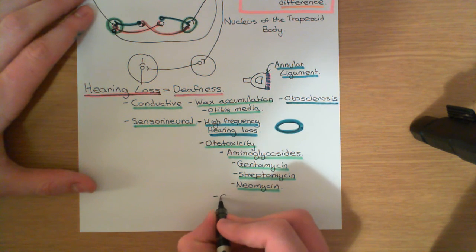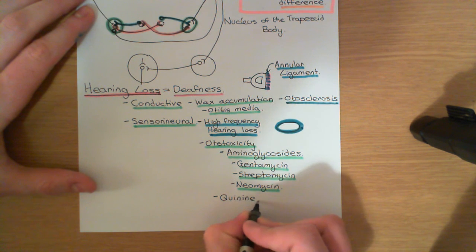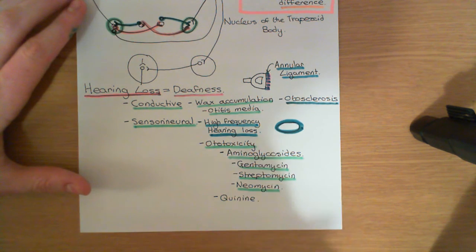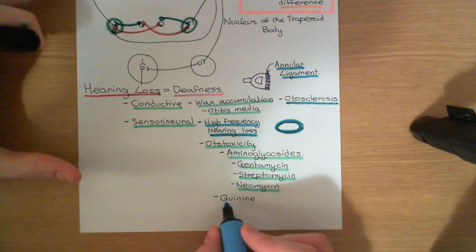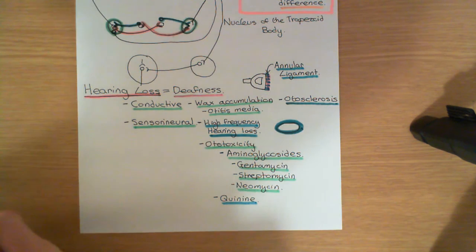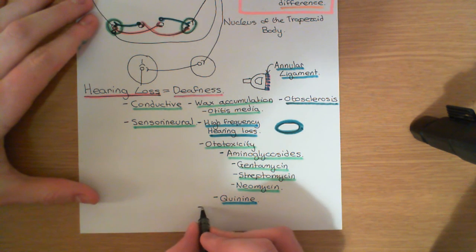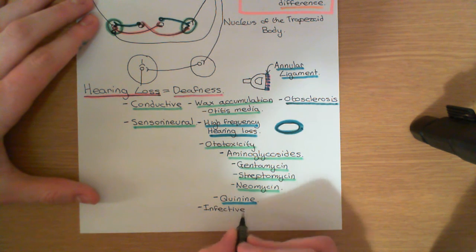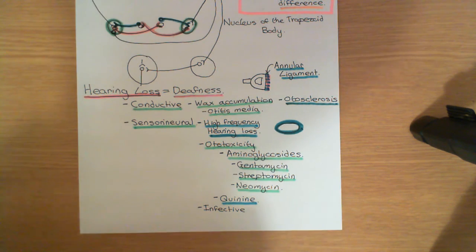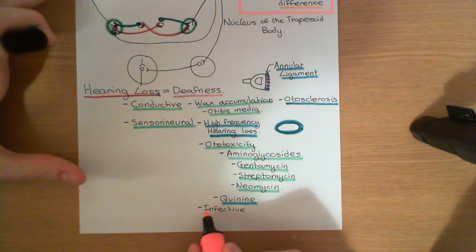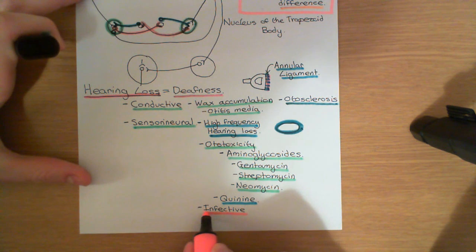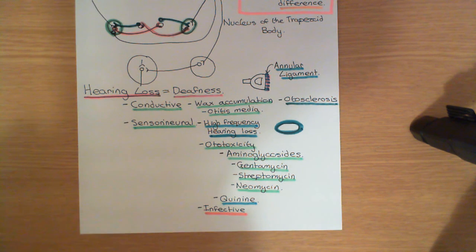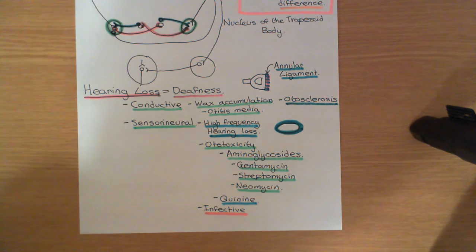Other drugs to be aware of include the antimalarial drug quinine, which can also have an ototoxic effect, leading to the death of hair cells and therefore sensorineural hearing loss. Finally, certain viral infections can specifically infect the hair cells and cause them to die, meaning you can no longer transduce oscillations of the cochlear duct into electrical signals — this is known as infective sensorineural hearing loss. So there we have three examples of conductive hearing loss and three examples of sensorineural hearing loss, ending our video on the auditory system.